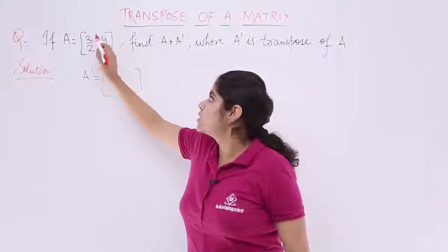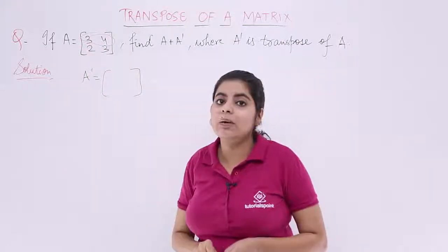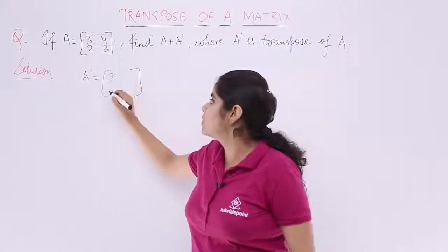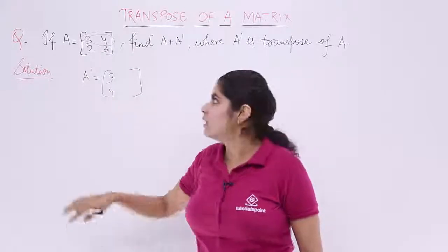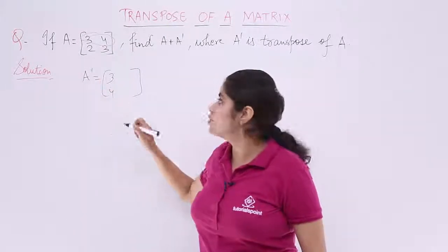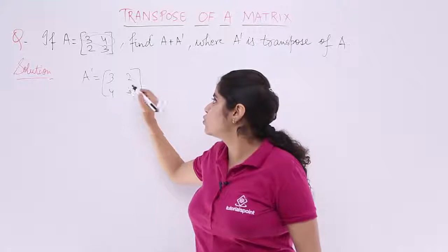The first row which is 3, 4 now becomes my first column. So 3 comes here, 4 comes here. Similarly, 2, 3 which is the second row becomes my second column. So 2, 3 comes here.